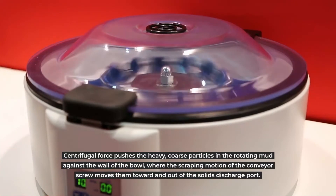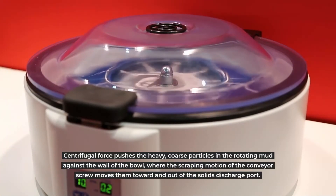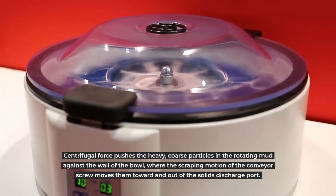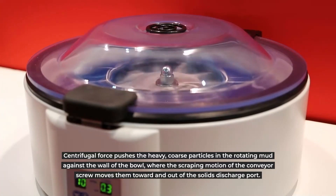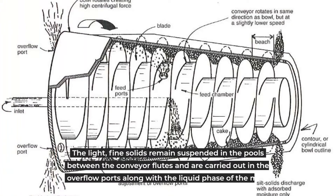Centrifugal force pushes the heavy coarse particles in the rotating mud against the wall of the bowl, where the scraping motion of the conveyor screw moves them toward and out of the solids discharge port. The light fine solids remain suspended in the pools between the conveyor flutes and are carried out through the overflow ports along with the liquid phase of the mud.